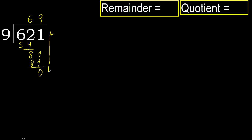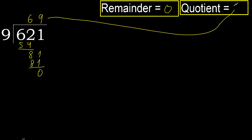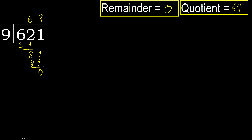Next: that is not a number, therefore finish it. 621 divided by 9 is here.